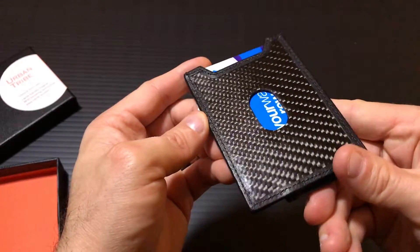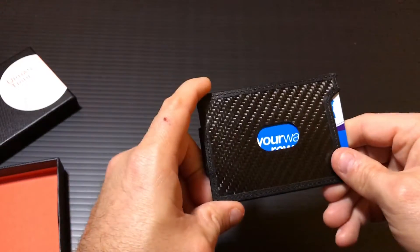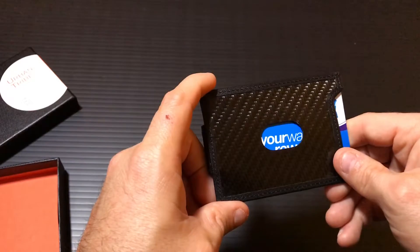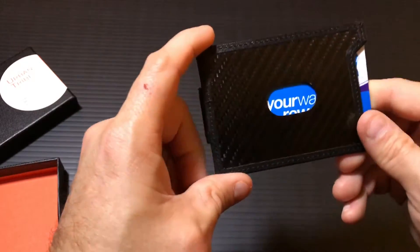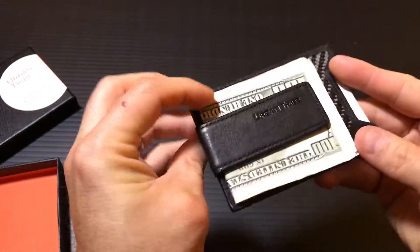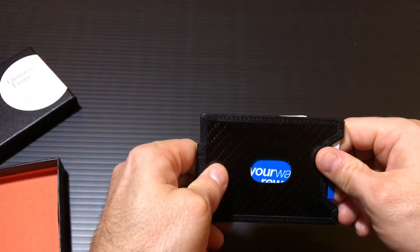This wallet is available for purchase on Amazon and I will list the link in the description below. Also check the description for the link to receive five dollars off your first wallet purchase simply by registering your email on the Urban Tribe website.